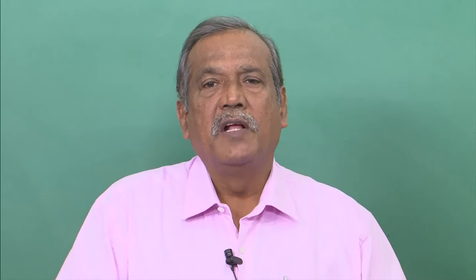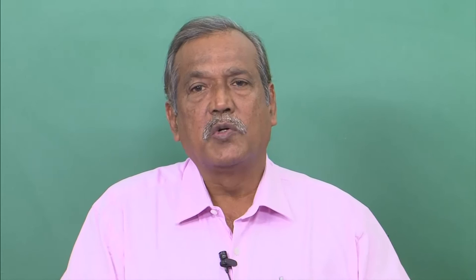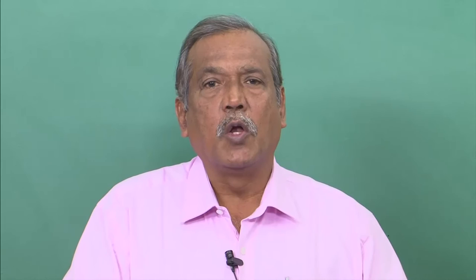Because of indiscriminate use, the problem of resistance came, residue problems emerged, and more importantly, health hazards to human beings and other higher animals were seen across the globe. So the concept of the third phase — the era of IPM — started from 1976 onwards. IPM became more important with the Hufekar project in the USA and in Southeast Asia under the FAO IPM program, which gave a boost to developing IPM strategy on various field crops in India.